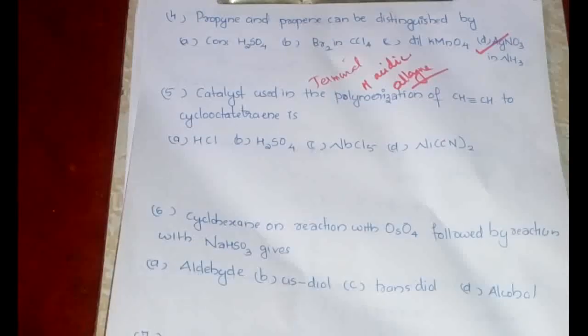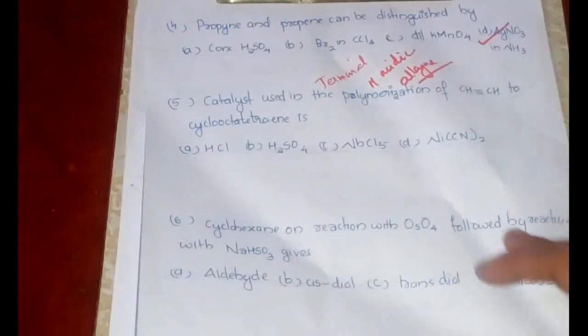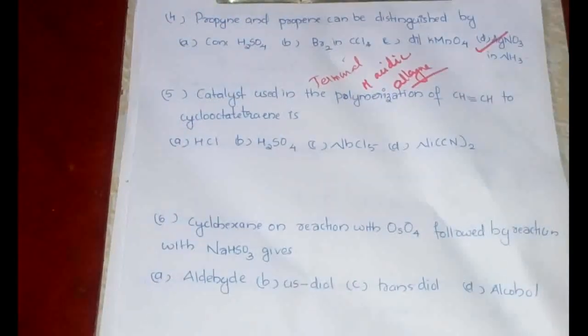Therefore, that would be useful for distinguishing propyne and propene. The distinguishing occurs because of the terminal acidic hydrogen present in alkyne. We have already discussed another question regarding the same topic in part one about the terminal acidic hydrogen of alkynes. Same is the concept that we are using here as well.